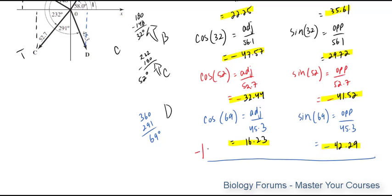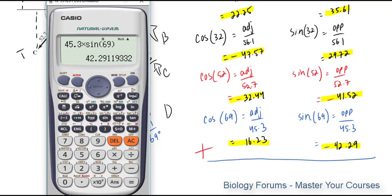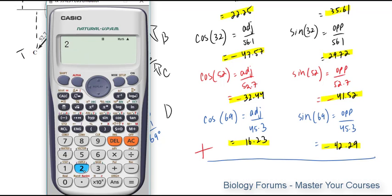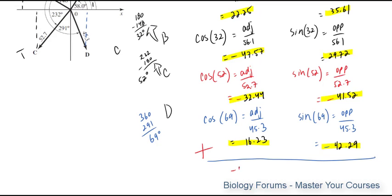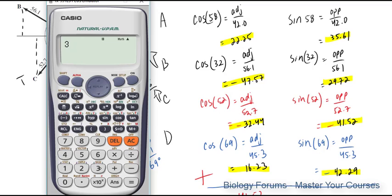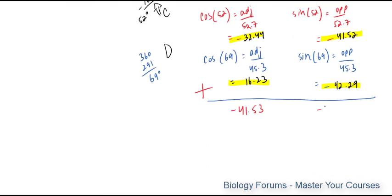And now what we'll do is we will add them. And we should get the x and y components of our resultant vector. 22.25 minus 47.57 minus 32.44 plus 16.23. And that gives us an answer of negative 41.53. And don't be alarmed if the answer you get is negative. That's totally normal. 35.61 plus 29.72 minus 41.52 minus 42.29. And the answer we get is negative 18.48.